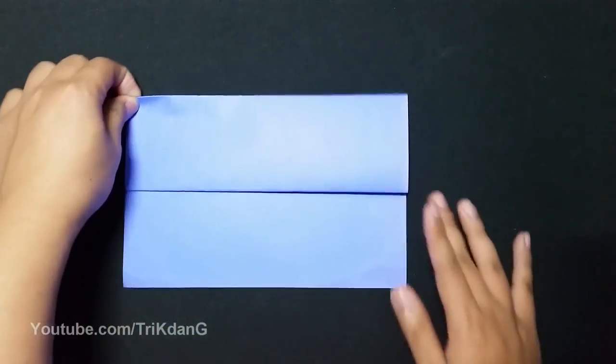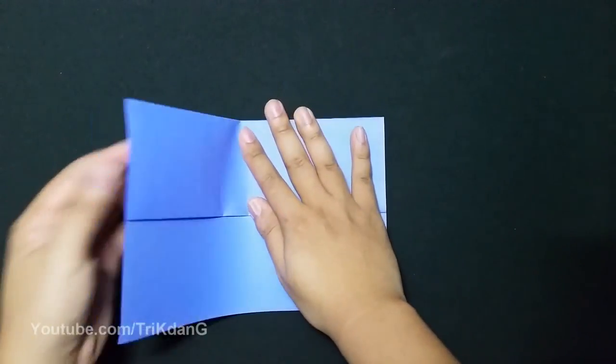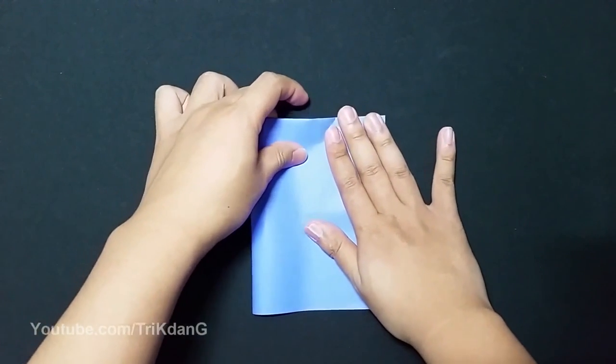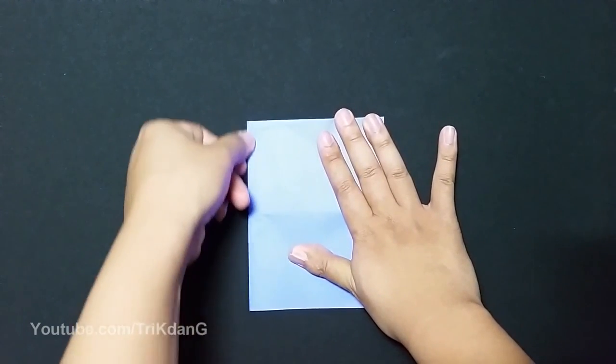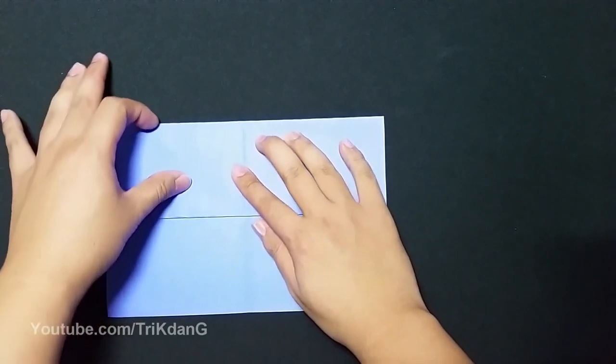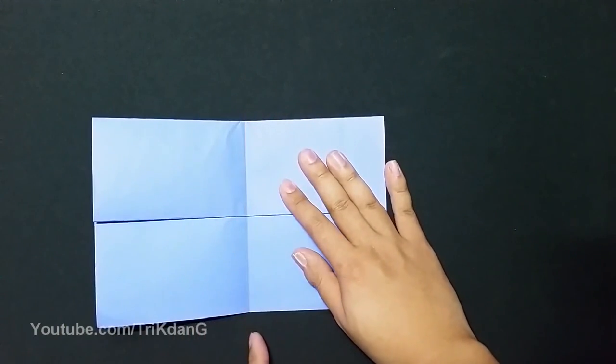Turn the paper this way and fold it in half. Now unfold the paper. Next step, I will start from this edge and fold it to the center crease.